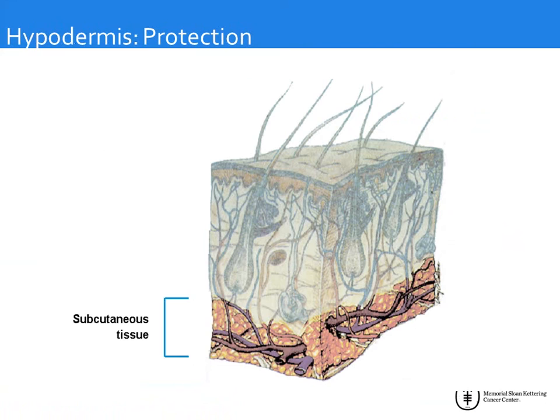The third and final layer is the hypodermis or subcutaneous fat, which mostly provides mechanical protection and insulation from thermal injury.